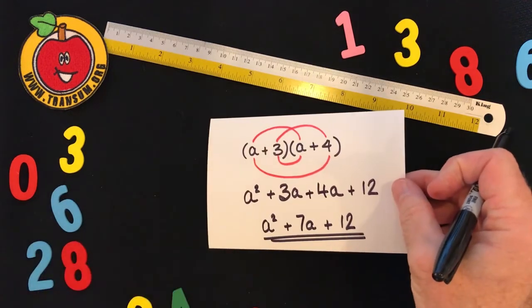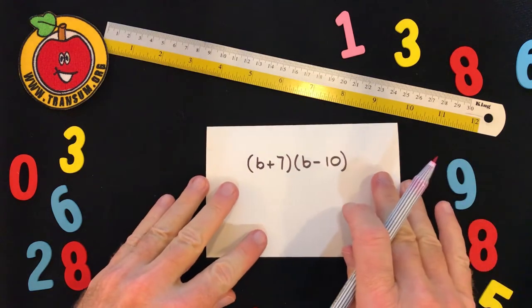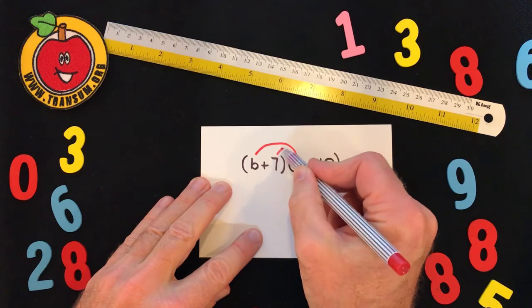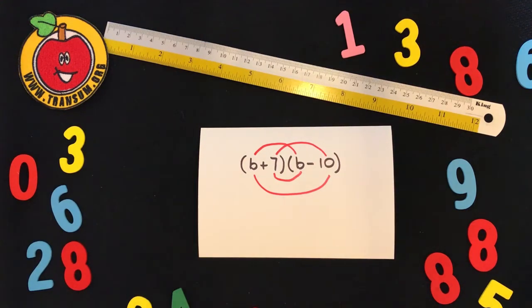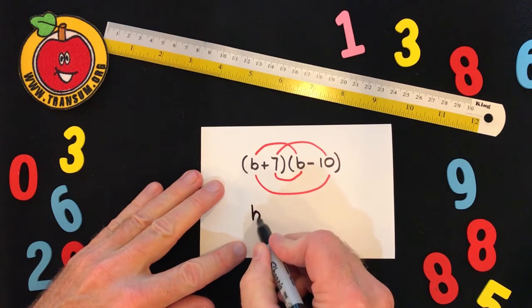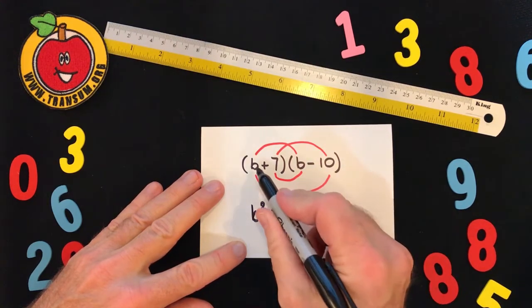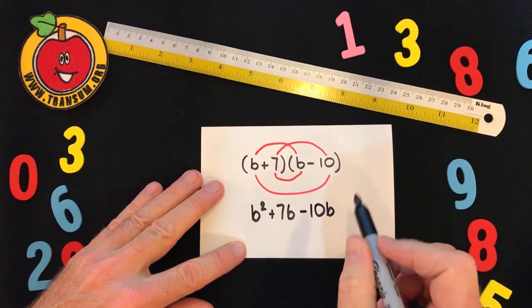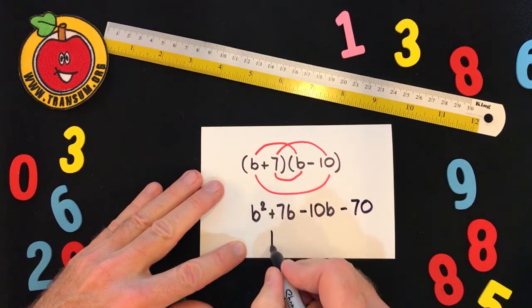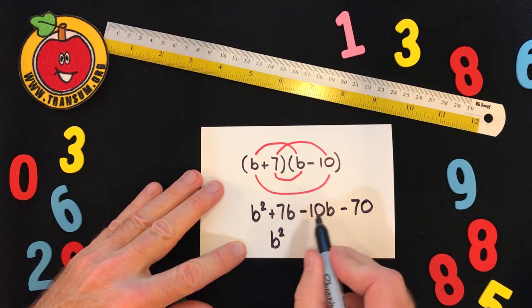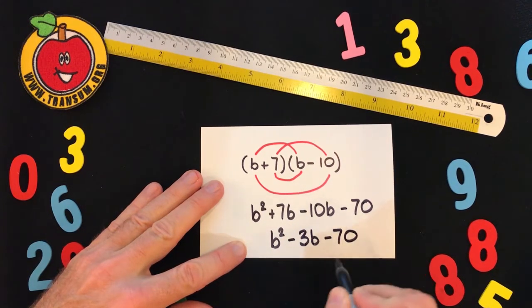Let's look at another example similar to that one. Here we have two pairs of brackets multiplied together. Let's draw in the left eyebrow, right eyebrow, nose, and mouth to remind us of all the multiplications we have to do. The left eyebrow gives us B squared. The nose gives us 7B — not forgetting that minus sign. The mouth gives us minus 10B. And the right eyebrow: plus 7 times negative 10 gives us negative 70. Collecting like terms, we have B squared minus 3B minus 70.